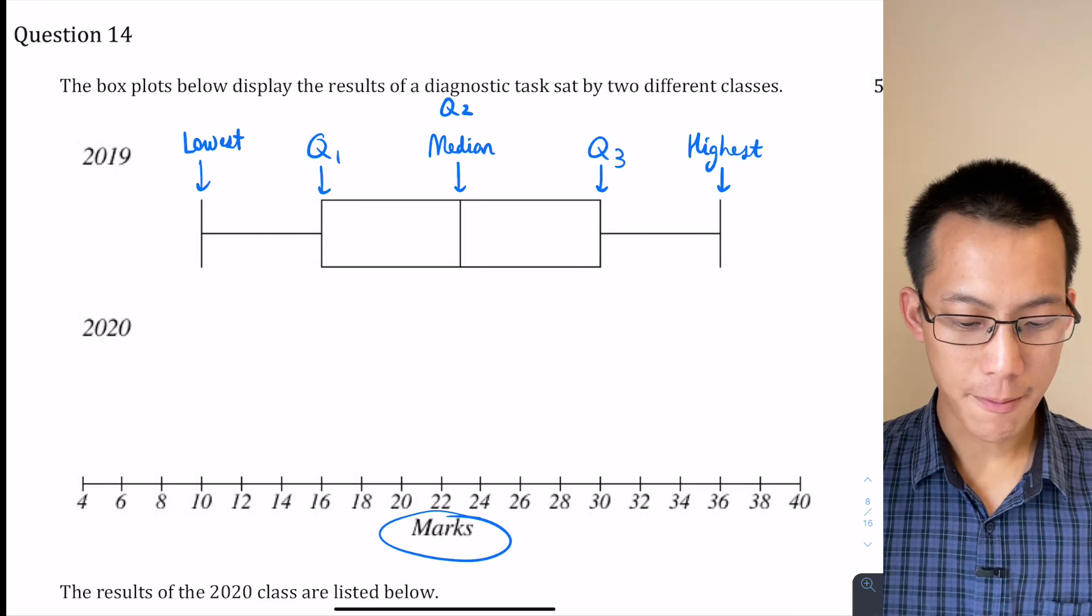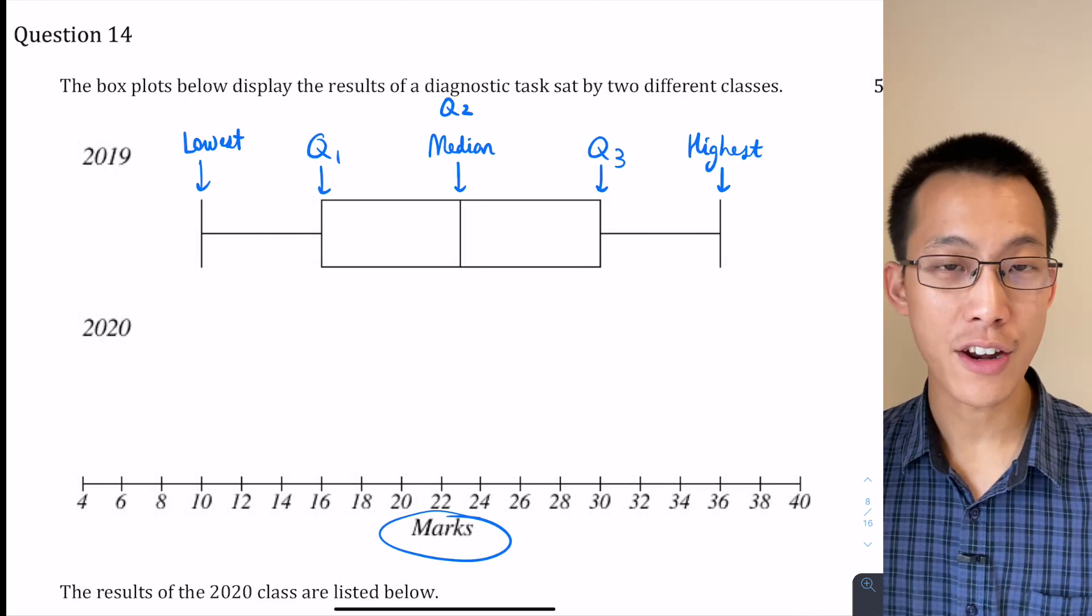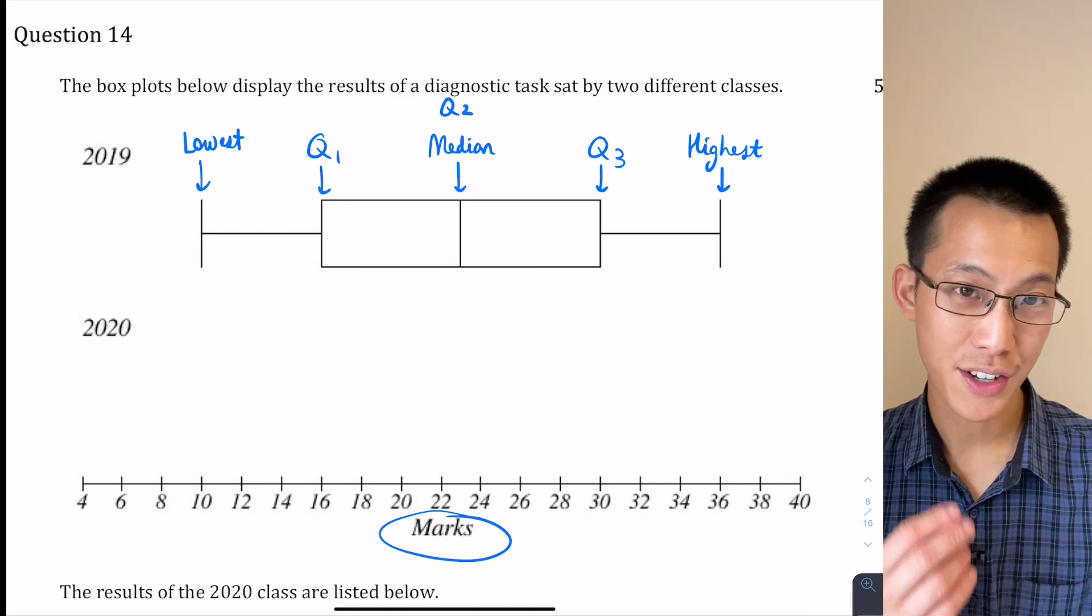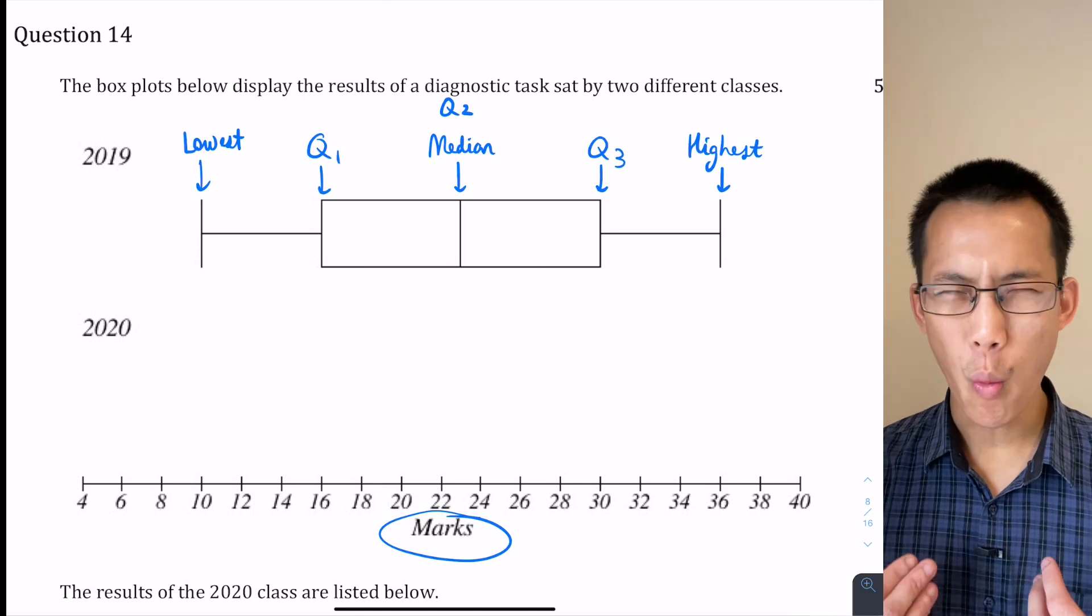Q1, Q2, and Q3 together don't break up the data into two, they break the data into four, so that's why we call them quartiles.